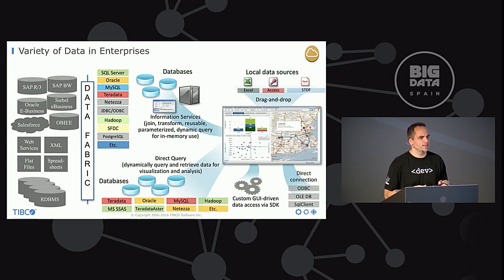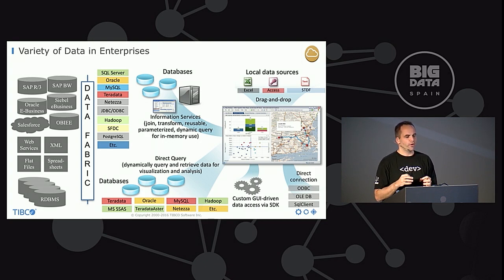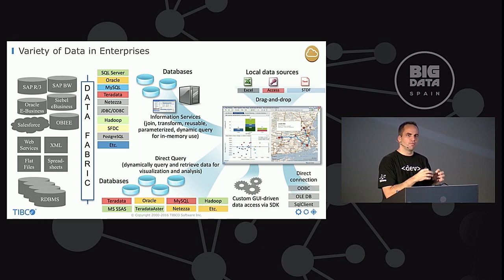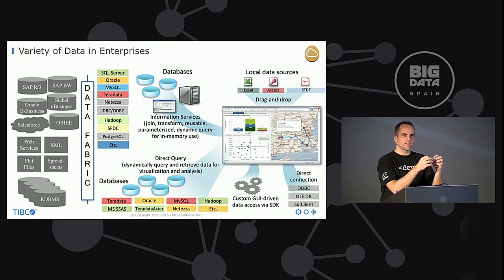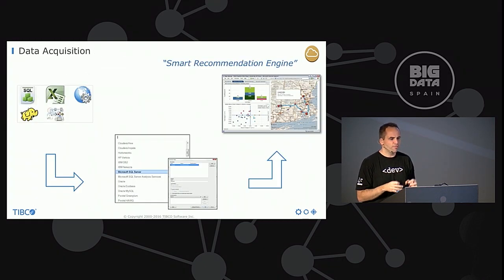In most enterprises it looks like this: you have many different data sources — legacy systems like a host or mainframe, Hadoop, data warehouse, CSV files, all of that. A key lesson learned from our projects is that usually if you want to leverage machine learning and add value, you have to combine the different data sources. For example, combine your CRM system with customer address and bank data, along with social data from Twitter and Facebook, and maybe other external information. Out of that combination you can build the added value.